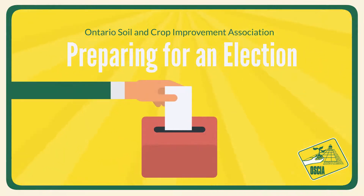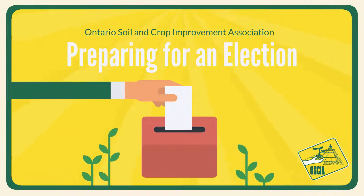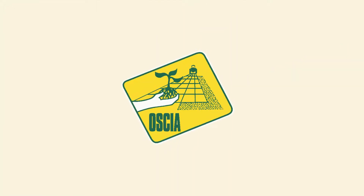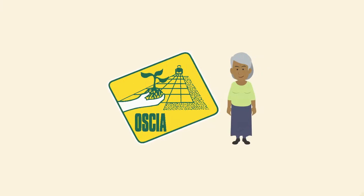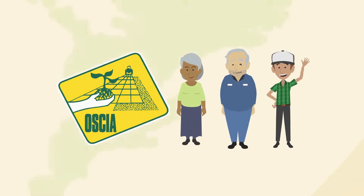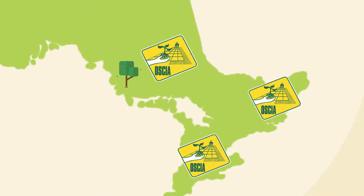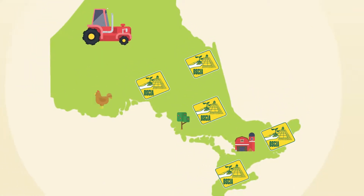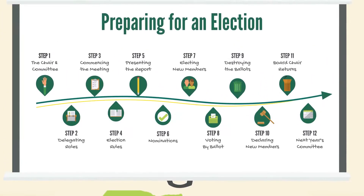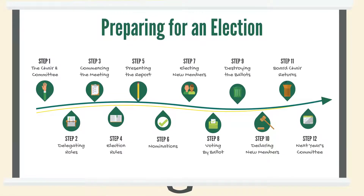Healthy election procedures are critical to the integrity of any not-for-profit organization. This two-part video series will help clarify Ontario Soil and Crop's approach to electing its respective board members. Each local or regional division of Ontario Soil and Crop can adjust their procedure to meet their general needs, but the approach showcased in these videos should inform their unique processes.